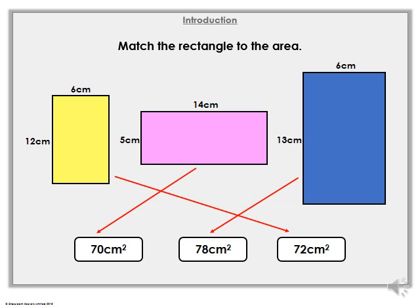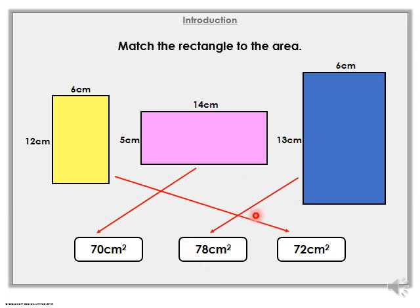Let's see if you were correct. So we worked out the shape on the left — it was 72 centimetres squared. This purple shape in the middle, hopefully you all did 14 times by 5. If you don't know that off the top of your head, you could have partitioned this number: 10 times 5 is 50, 4 times 5 is 20, 50 add 20 equals 70 centimetres squared. And then finally, this blue one at the end, hopefully you would have done 13 times by 6. We could partition 13 into 10 and 3: 10 times 6 is 60, 6 times 3 is 18, and added together you would have had 78 centimetres squared.